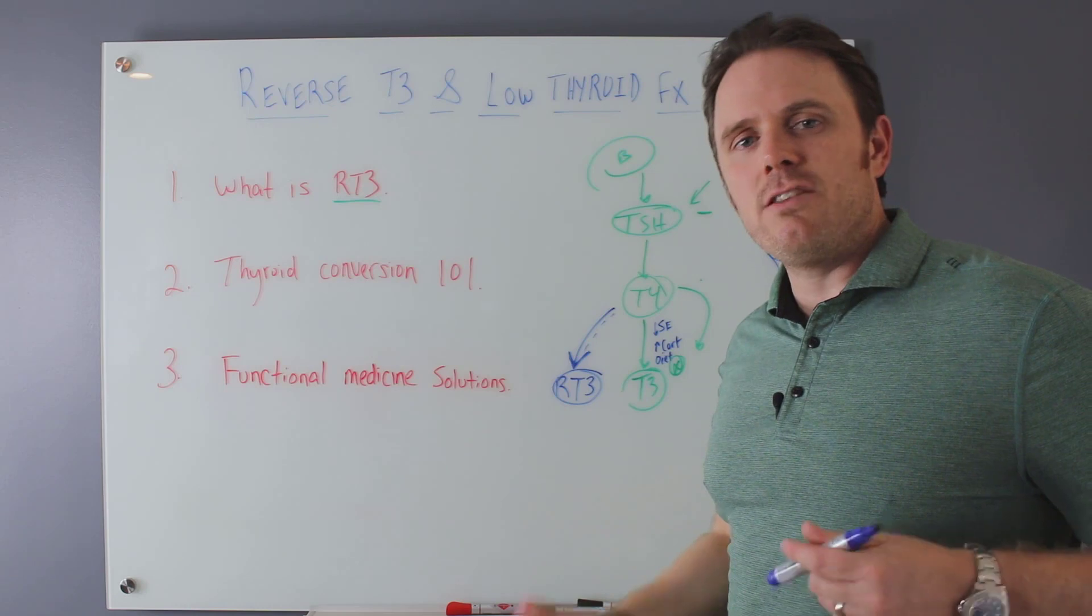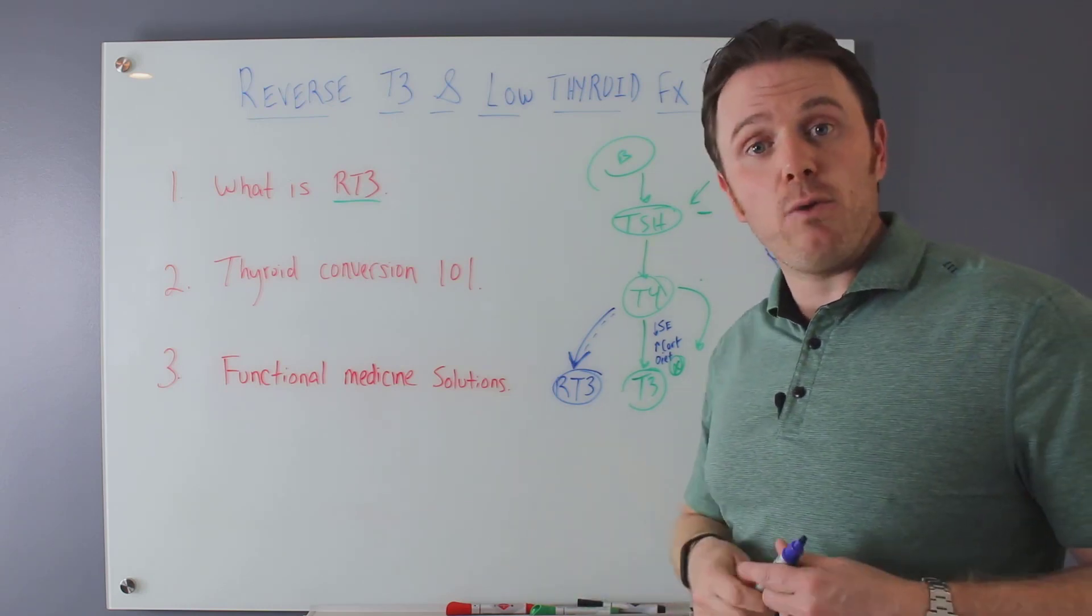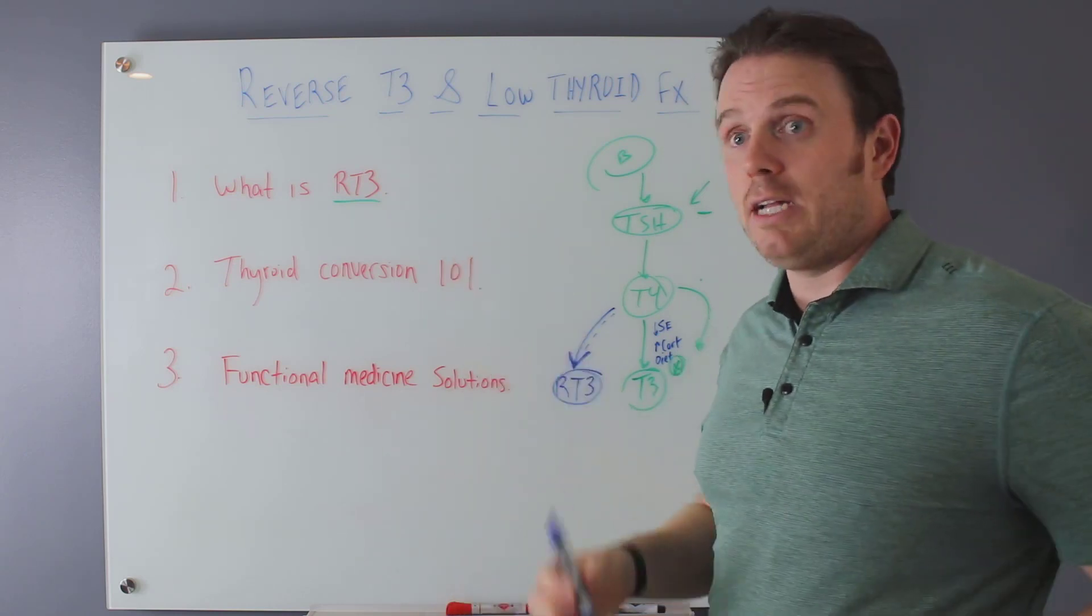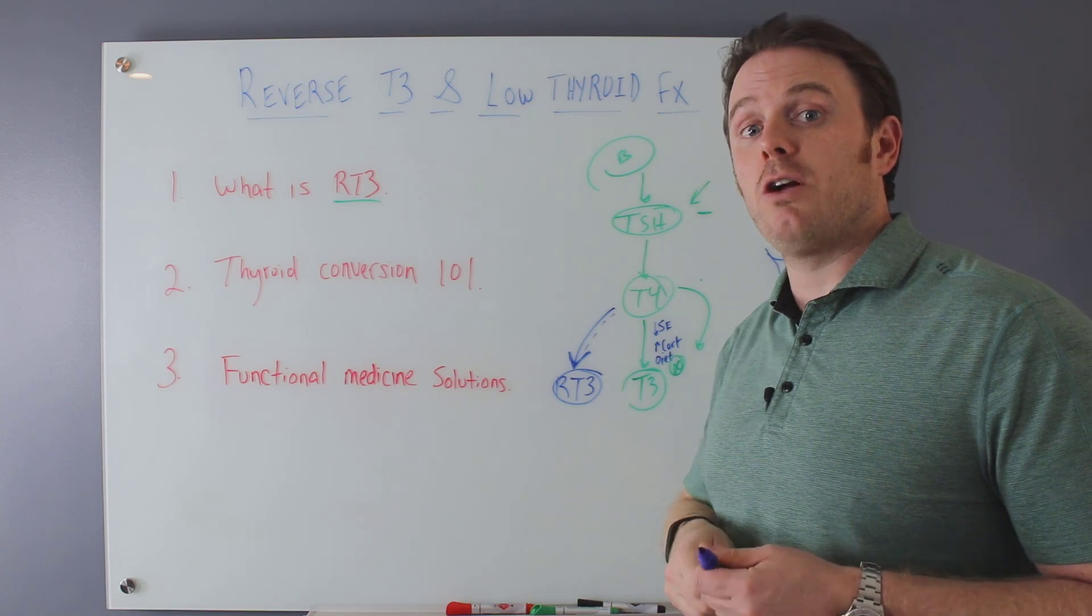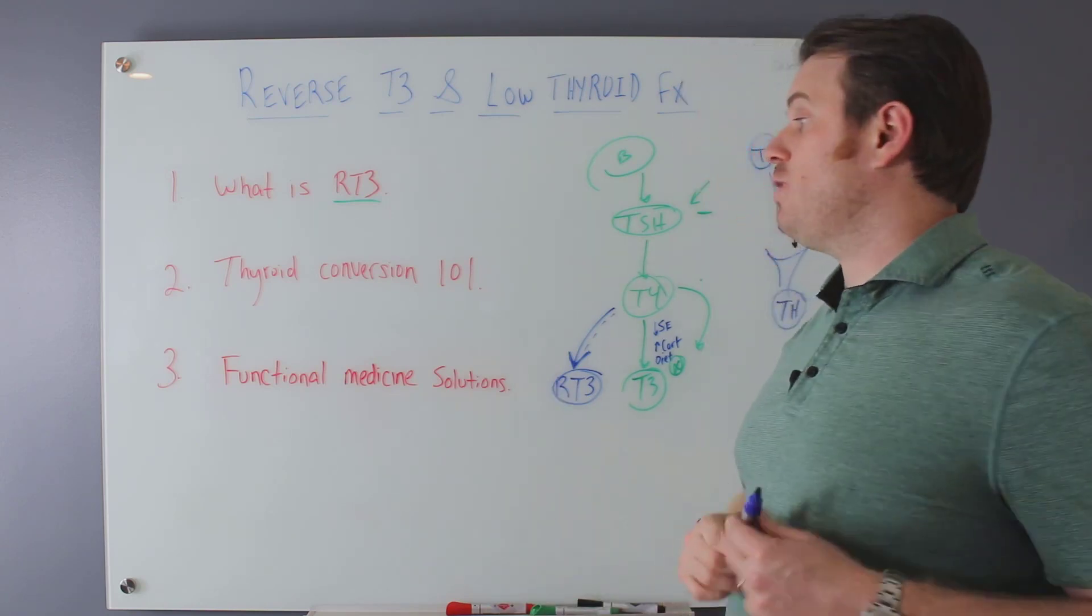And then of course, insulin, high or too low insulin can also affect reverse T3. If we don't get enough calories, we're starving, we're actually going to go very low on insulin. If we're eating too much, especially too much carbs and sugar, that may actually cause insulin resistance, and that may upregulate reverse T3 as well.